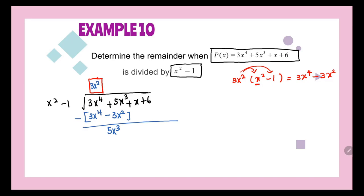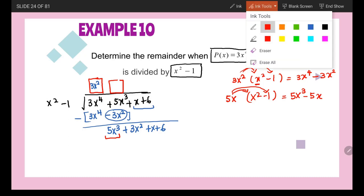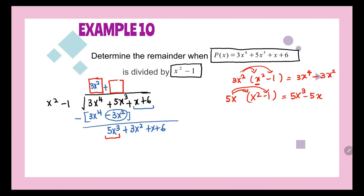The next expression is x, but we have negative 3x² here, meaning the expression to subtract with negative 3x² will be 0x². So 0 minus negative 3 gives positive 3x², and we write plus x plus 6 at the bottom. Next we find what multiplies x² minus 1 to give 5x³, which is 5x. So 5x times x² gives 5x³ and 5x times negative 1 gives negative 5x.